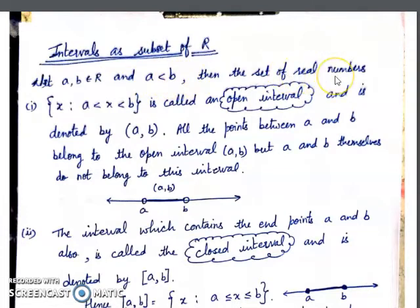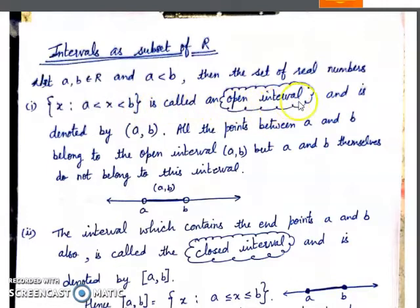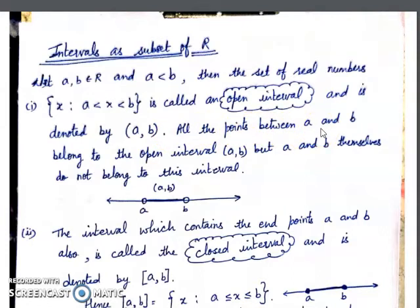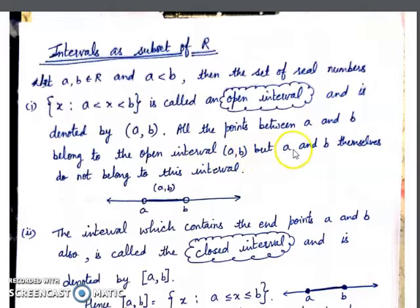Then the set of real numbers X such that A is strictly less than X and strictly less than B is called an open interval, denoted by the small bracket (A, B). This interval means all the points between A and B on the number line — all real numbers between A and B — but A and B themselves do not belong to this interval. The endpoints are not included.